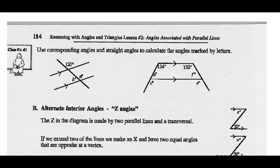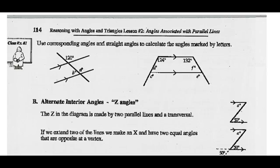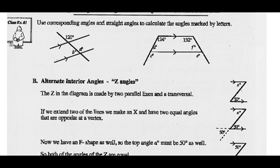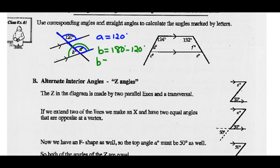Use corresponding angles and straight angles to calculate the angles marked by the following letters. If I make an F pattern right here, I know that A and 120 are corresponding angles and they should be equal. I also know that angles along a straight line add up to 180. So angle B is going to equal 180 minus angle A, which is 120. So angle B should equal 60 degrees.